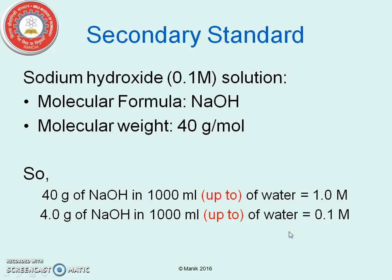For the secondary standard, sodium hydroxide is taken and will be standardized with the help of oxalic acid. The molecular weight of sodium hydroxide is 40 g/mol. Therefore, 4 g of NaOH in 1000 ml gives a 0.1 molar solution. Remember, the final volume must be up to 1000 ml and must not exceed 1000 ml.